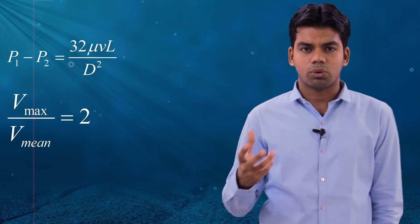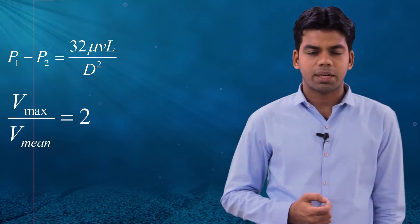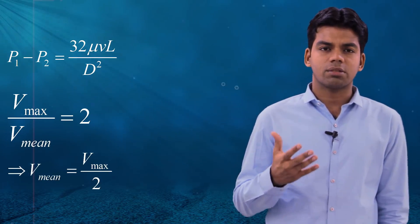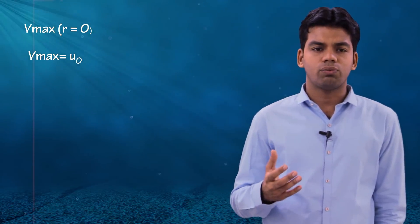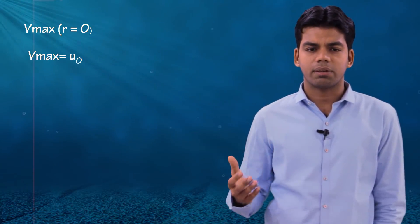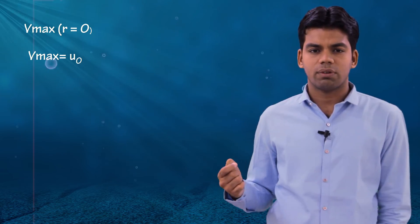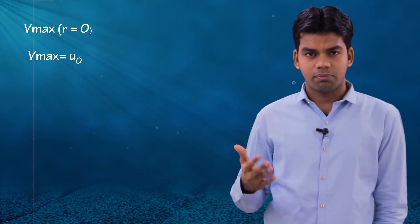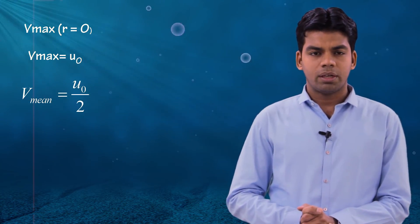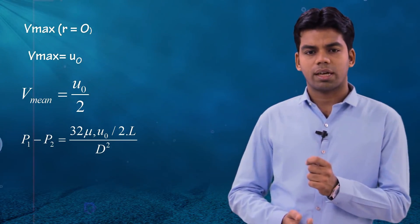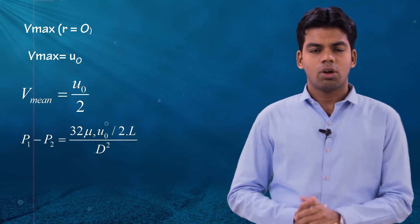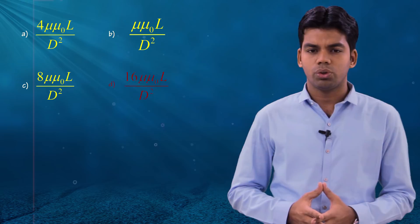We apply the shortcut: V_max / V_mean = 2, so V_mean = V_max / 2. To find V_max, put r = 0 in the velocity expression: u = u₀(1 − 0) = u₀. So V_max = u₀ and V_mean = u₀/2. Substituting into the Hagen-Poiseuille formula: P₁ − P₂ = 32μ(u₀/2)L/d² = 16μu₀L/d².